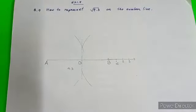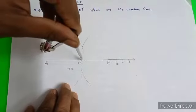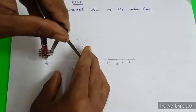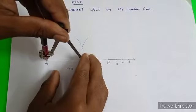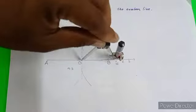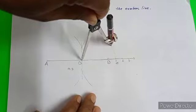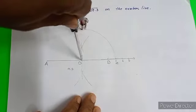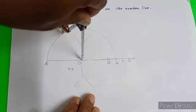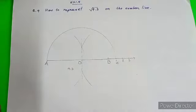Now, taking O as a center, I will draw a semicircle here on the line. Once this semicircle is drawn...